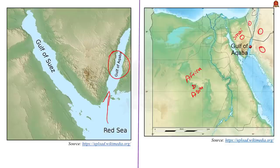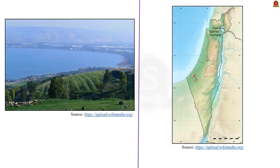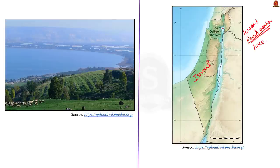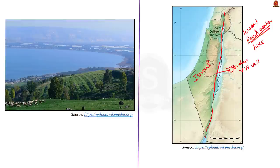The Sea of Galilee is also called Lake Tiberias and is located on the northern part of Israel. It is a freshwater lake and the lowest freshwater lake in the world, located between 215 and 209 meters below sea level. The lake is situated in the Jordan Rift Valley, which was formed due to the separation of the African plate from the Arabian plate. It is mainly fed by the Jordan River and some underground springs.